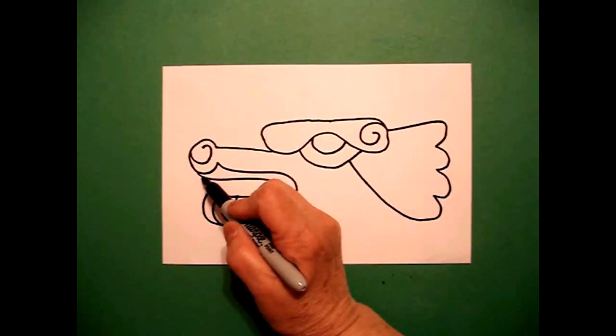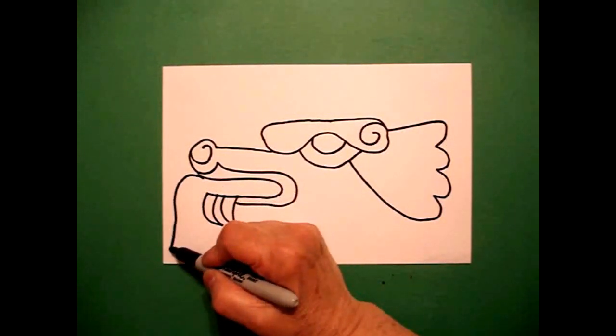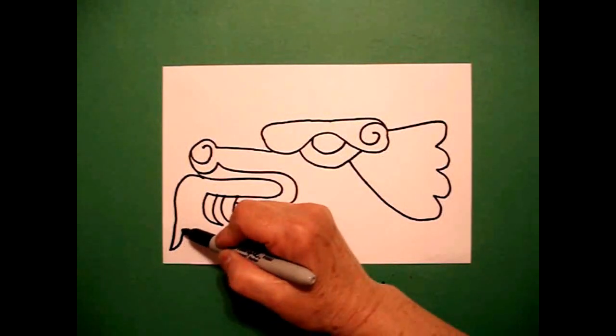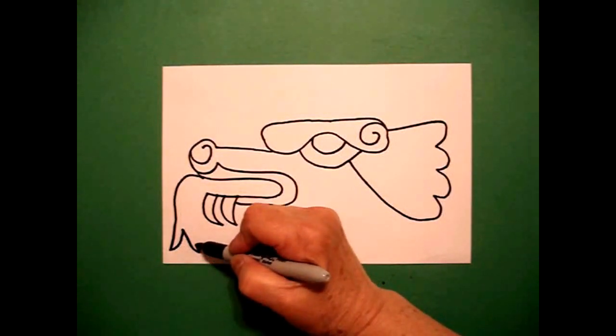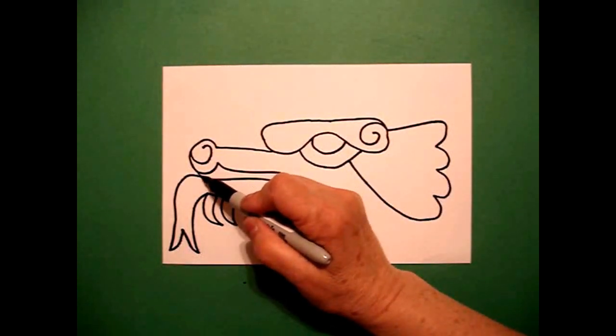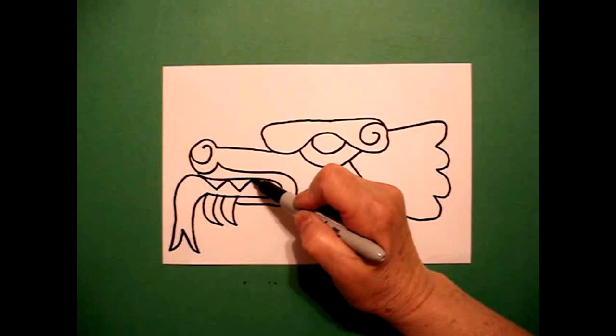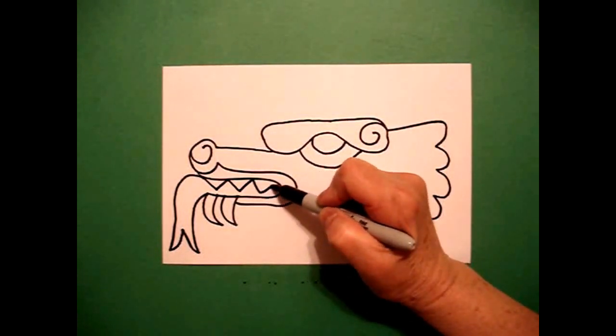I come way over here on the left side and I draw a curved line down, curved line up, down, up, connect. And I'm going to add some triangles, baby triangle one, triangle two, triangle three.